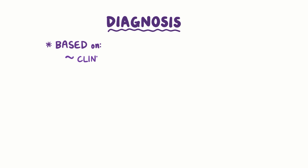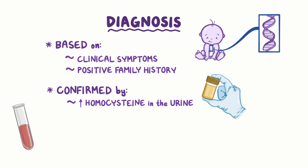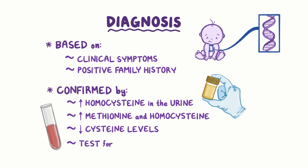Diagnosis of homocysteinuria is based on the presence of clinical symptoms and a positive family history of the disease. The diagnosis can be confirmed by elevated levels of homocysteine in the urine. A blood test will show elevated methionine and homocysteine levels and decreased cysteine levels. Finally, a blood test for vitamin B6, B12, and folate levels should also be done.